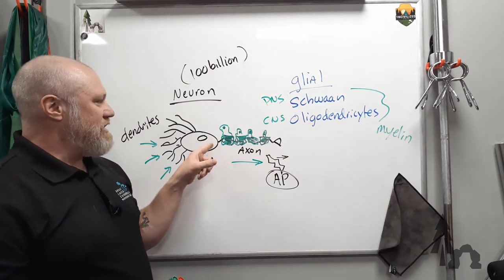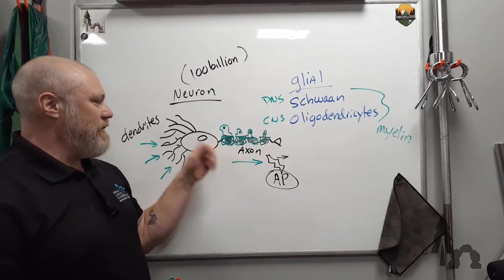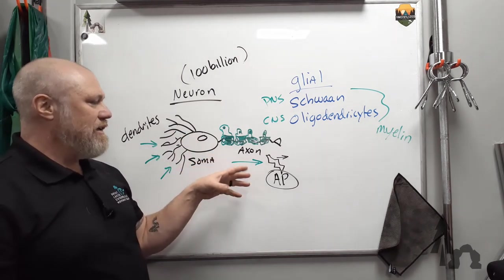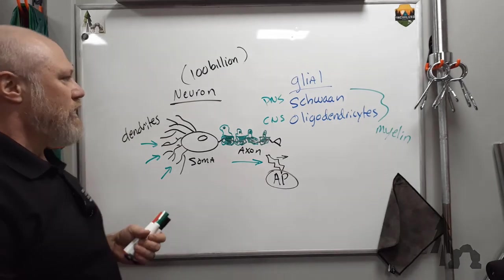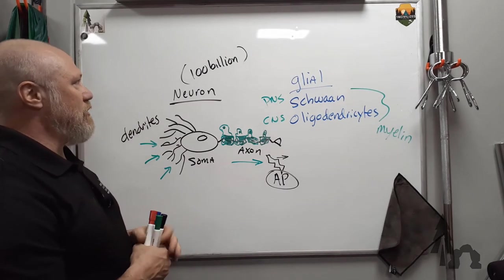Whereas the skinnier, smaller axons or even dendritic fibers that are non-myelinated, they can be as slow as 2 to 5 meters a second. So it makes a big difference. We get into that a little bit later.